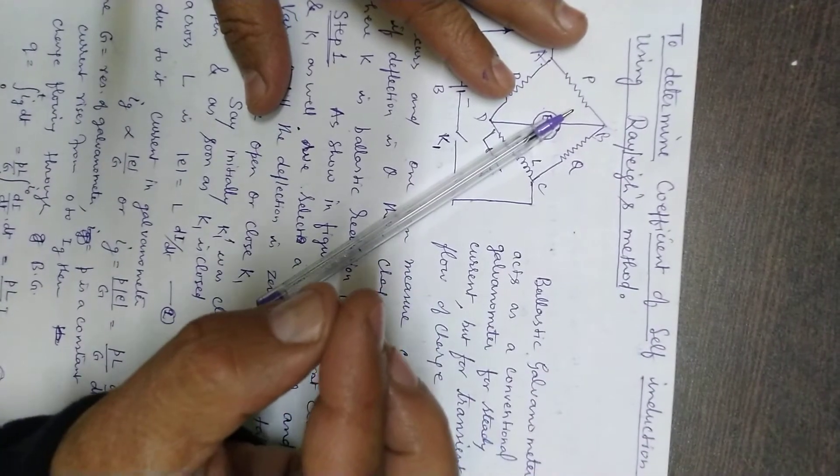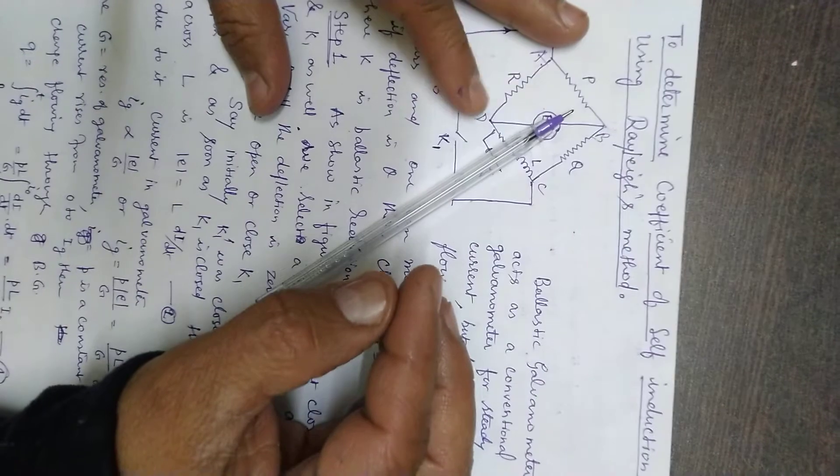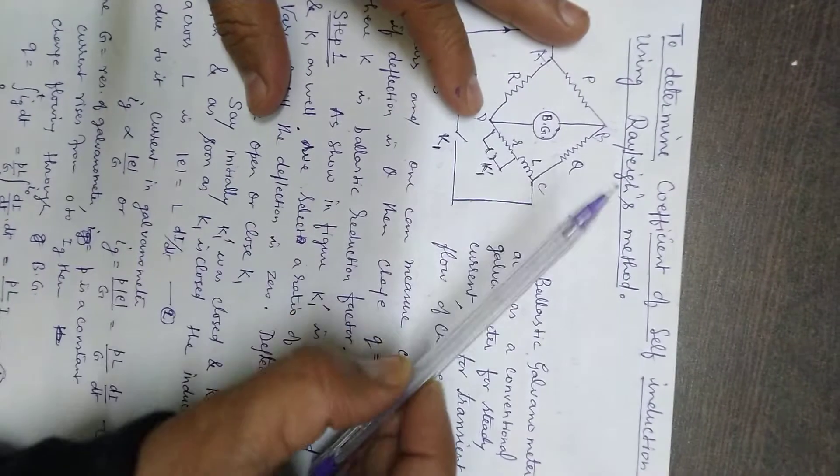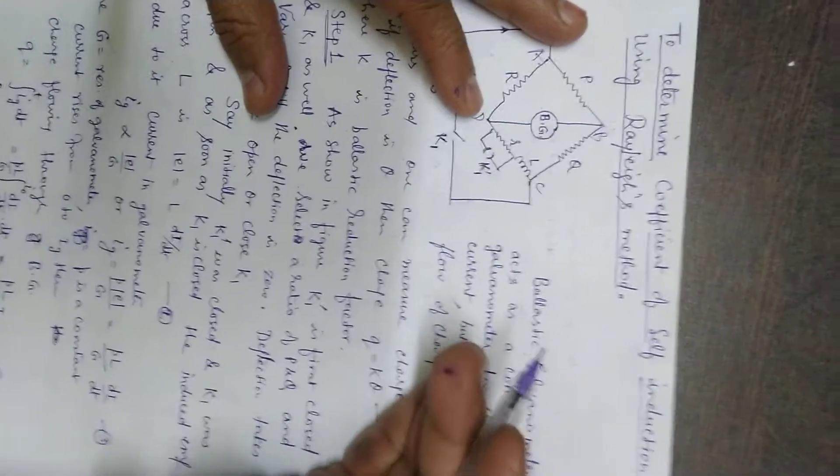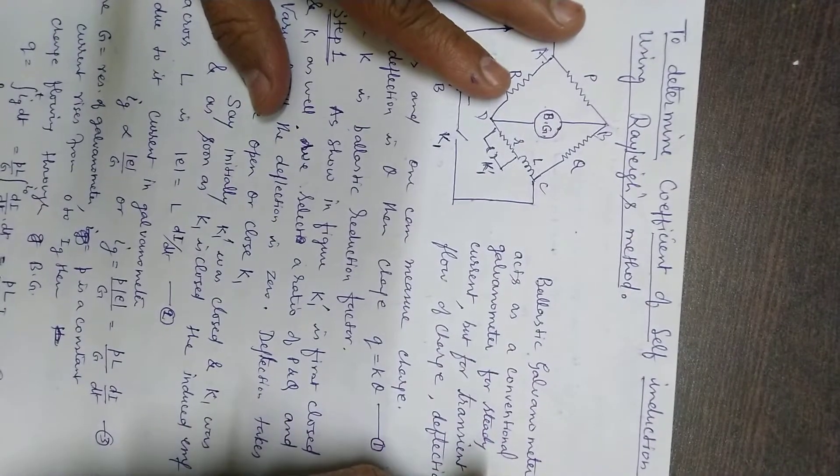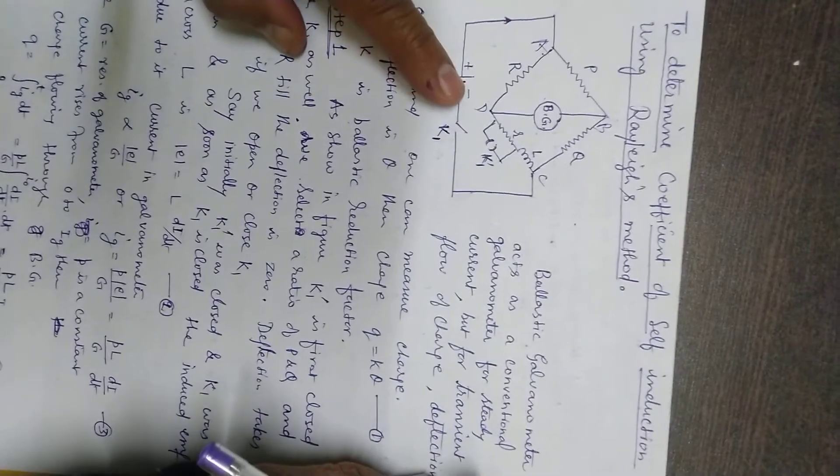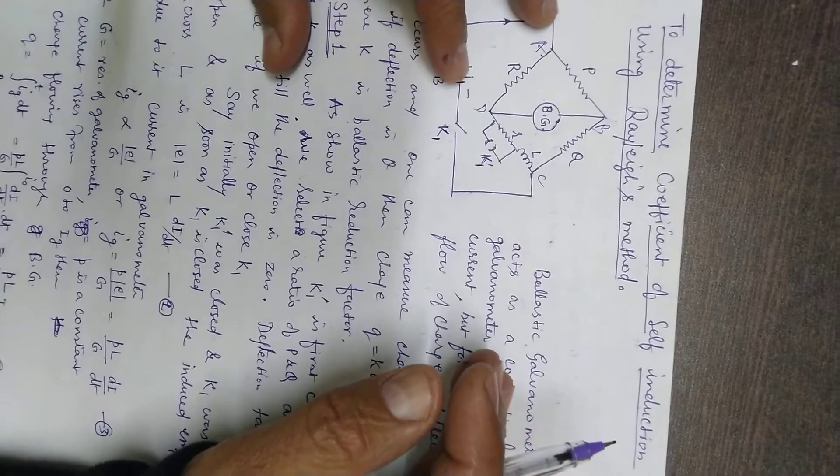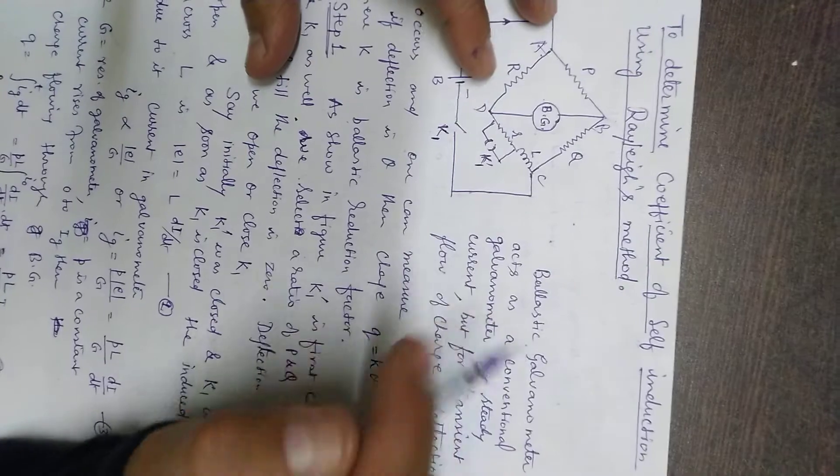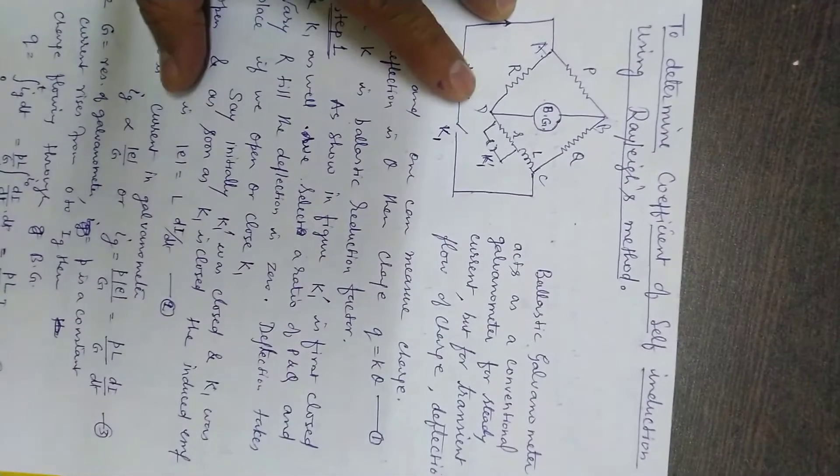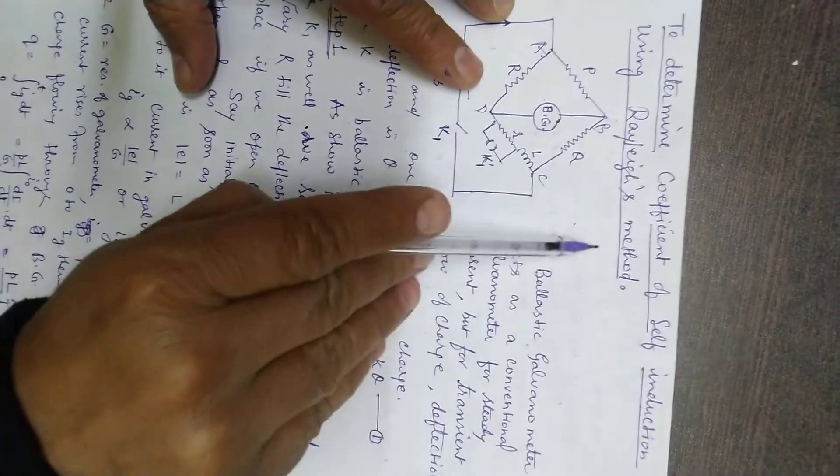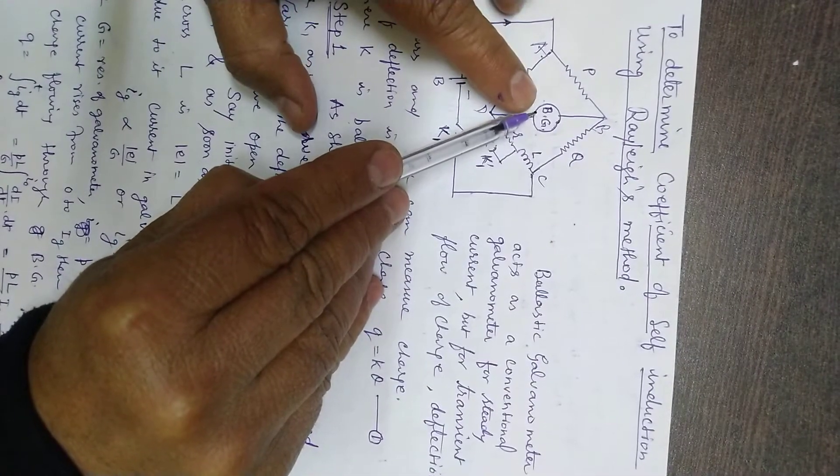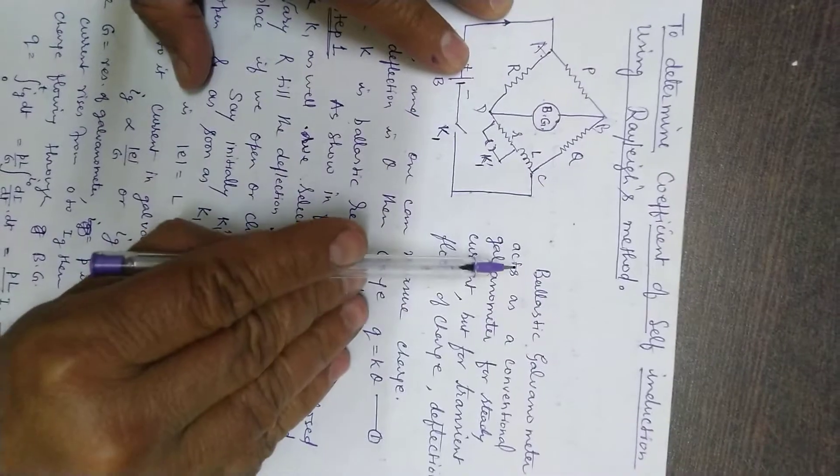The beauty of ballistic galvanometer is that not only in the steady state it behaves like a normal galvanometer and can measure the current, but if there is a transient charge flowing through the galvanometer, then it gives a deflection which is proportional to the charge, so one can even measure the charge. In your second year laboratory class you will have an experiment with ballistic galvanometer as well.